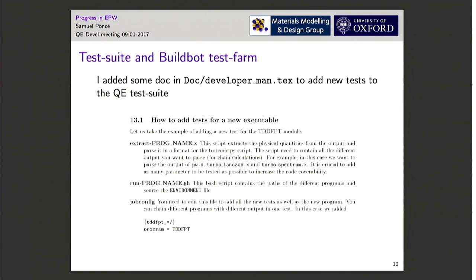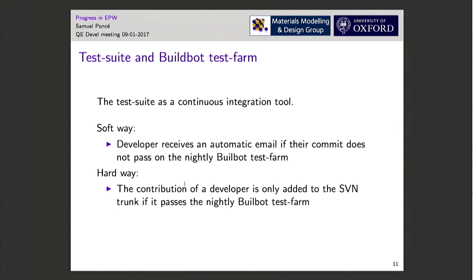Once we have tests covering enough properties of our software, I think we should use the test suite as a continuous integration tool, which means imposing some rules. The software approach would be: when you commit a development to the SVN trunk, if your commit breaks the test farm or part of it, you should automatically receive an email telling you that you didn't pass the test farm, so at least you know.